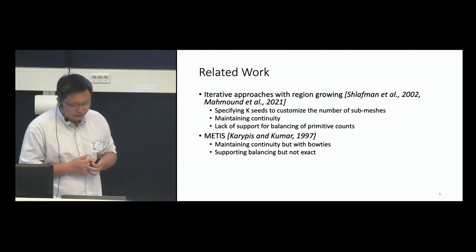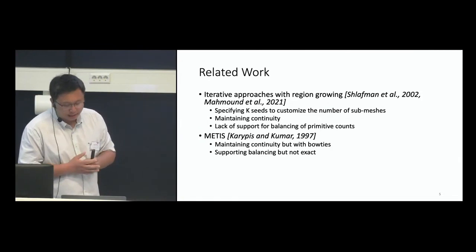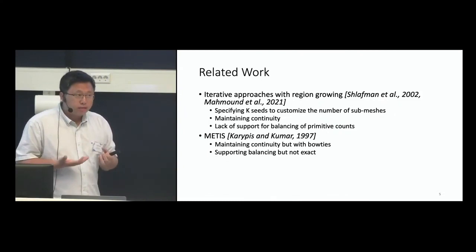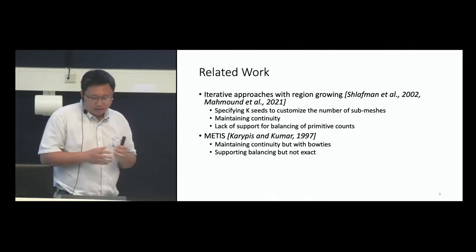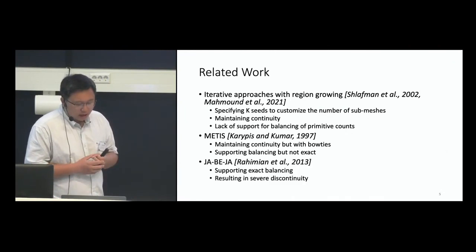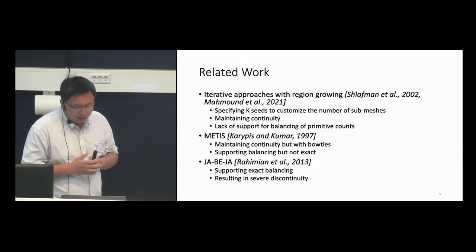Matisse maintains continuity conditions, but does have the bow tie issue — they call this continuously connected through vertices. It does support balancing because it does bisection partitioning hierarchically, which is fast, but not exactly balanced. Another method called Jabija supports exact balancing — exactly equal numbers of triangles — however there are serious issues with continuity, as it does not produce continuously connected patches.